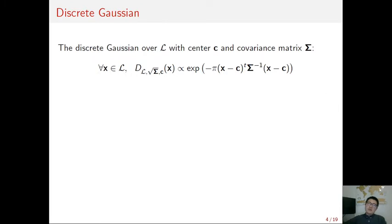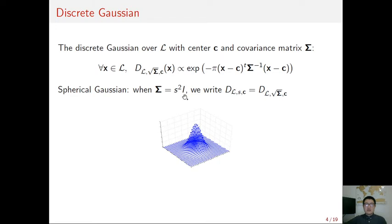The discrete Gaussian is an important distribution over a lattice. It is specified by three parameters: the lattice L, the center c, and the covariance matrix sigma. For a discrete Gaussian, the probability of each lattice point is proportional to the value of the Gaussian function. In particular, when sigma is a scalar identity matrix, we call the discrete Gaussian spherical, and the parameter is the width of the spherical Gaussian.